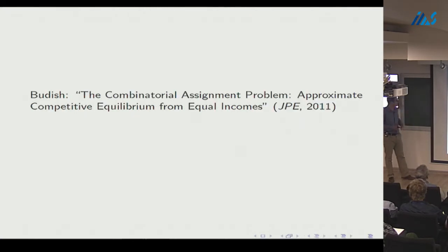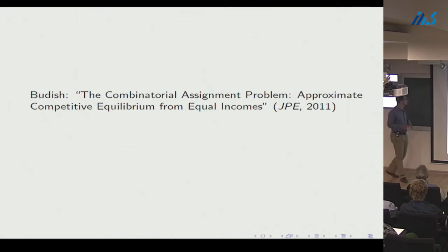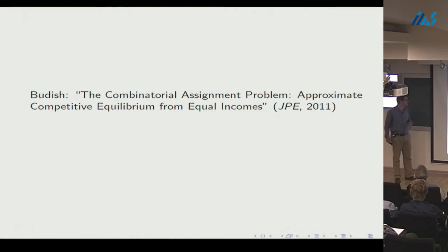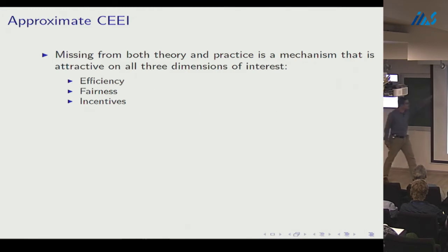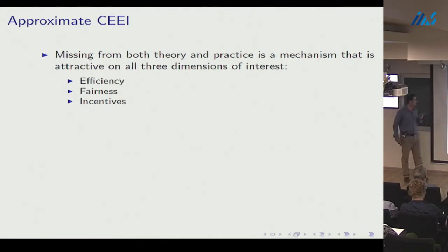With that, let me move to the next paper. The first three papers I'll discuss were published in reverse chronological order of their intellectual priority — a quirk of economics and computer science publication processes. This paper proposes a mechanism called the Approximate Competitive Equilibrium from Equal Incomes. The goal is a mechanism attractive with respect to efficiency, fairness, and incentives — missing from prior theory and from practice.